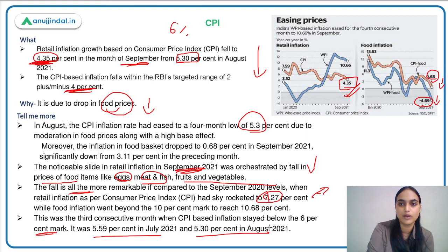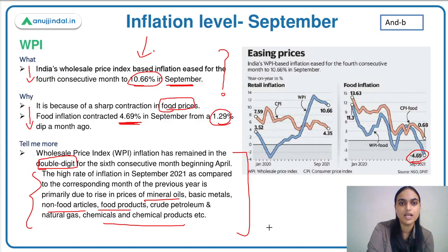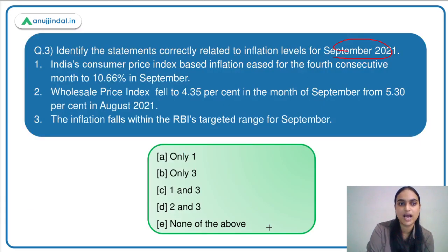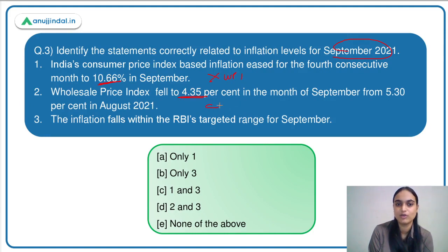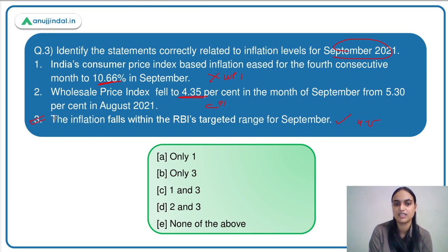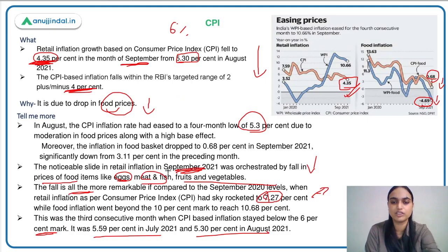Coming back to our question on inflation — we have to identify the correct statements. Statement 1 says CPI is at 10.66 — no, that's WPI. Statement 2 says WPI fell to 4.35 — no, that's CPI. Statement 3 says inflation levels fall within RBI's targeted range for September — yes, 4.35% is within the 2 to 6% range. So only the third statement is correct. Answer is option B. With this, I would like to end this session. I hope it was useful. Thank you so much.